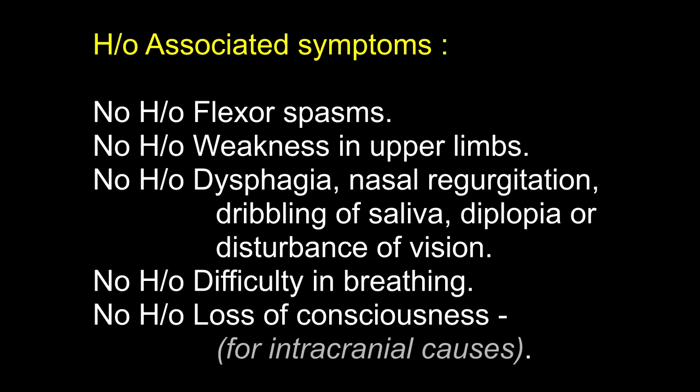There is no history of flexor spasms, no history of weakness in the upper limbs, no history of dysphagia, nasal regurgitation, dribbling of saliva, diplopia, or disturbance of vision. Why did you ask that? To know whether cranial nerves are involved. When will cranial nerves be affected in association with paraplegia? In multiple sclerosis and in Guillain-Barré syndrome of ascending type. There is no history of difficulty in breathing, no history of loss of consciousness. Why? For a possible intracranial cause.